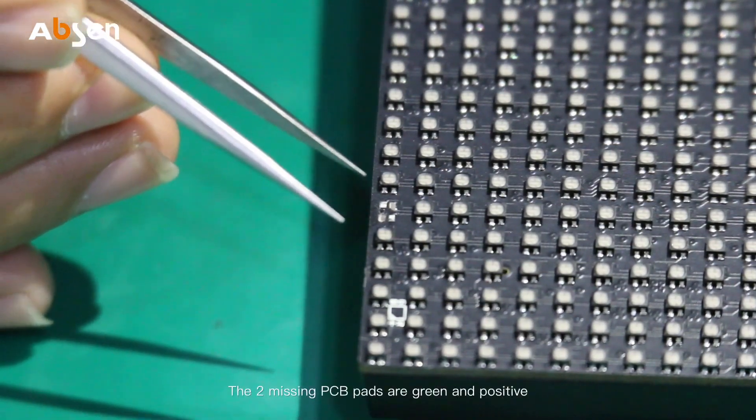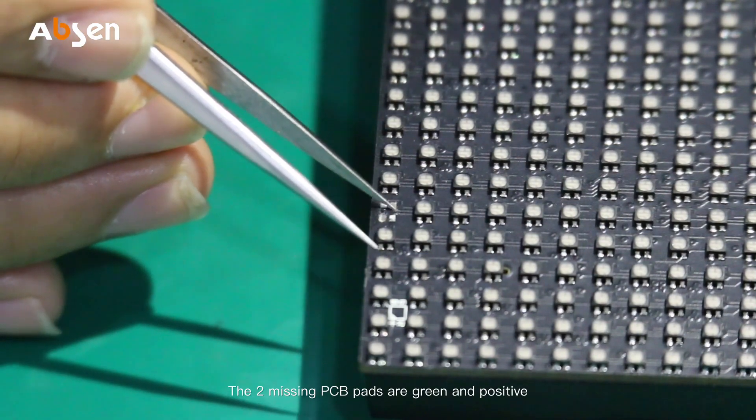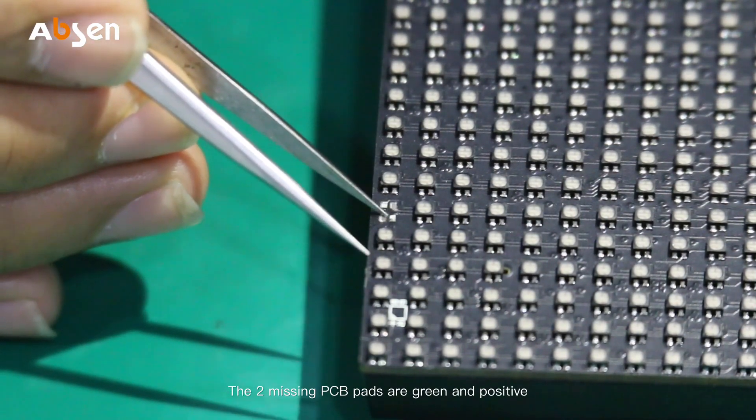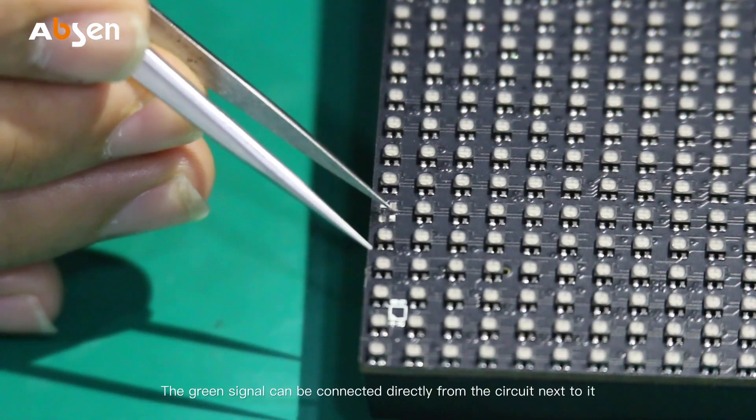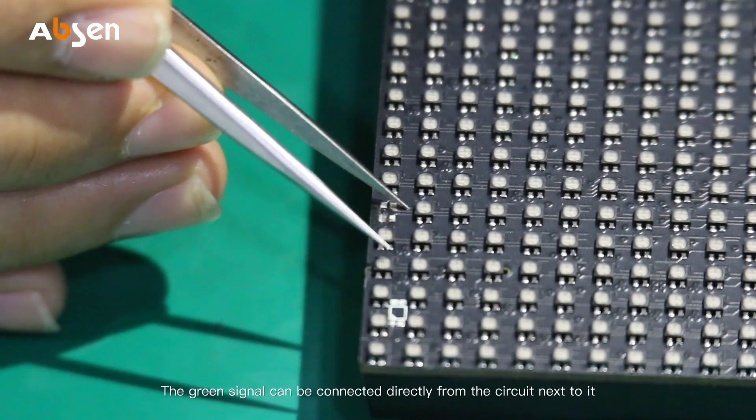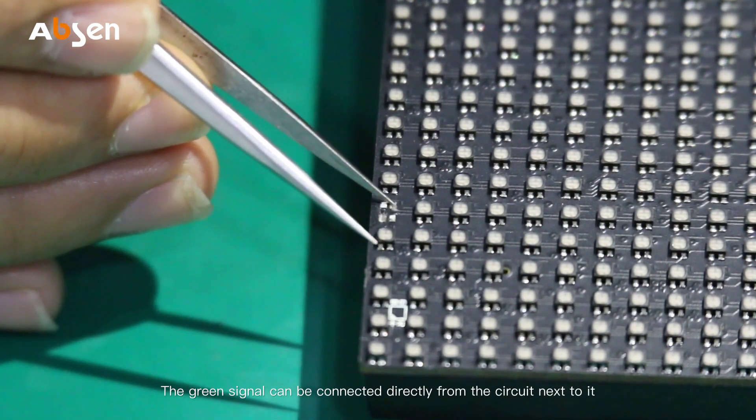Now we will need to figure out how to jump the wire. The two missing PCB pads are green and positive. The green signal can be connected directly from the circuit next to it.